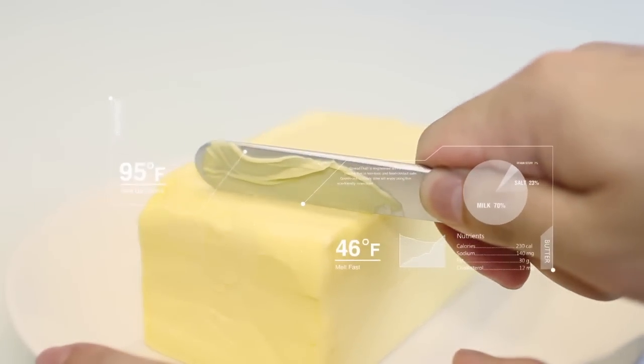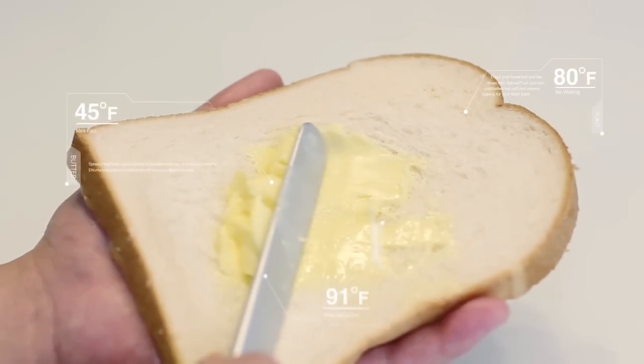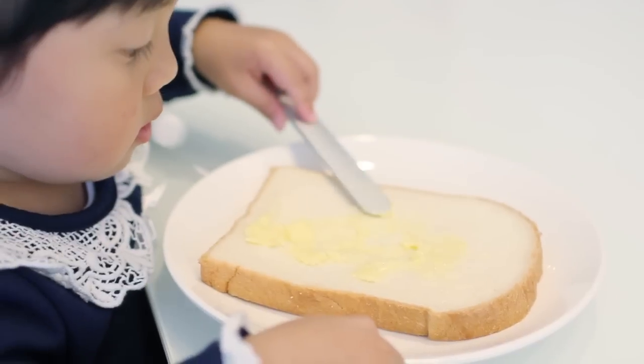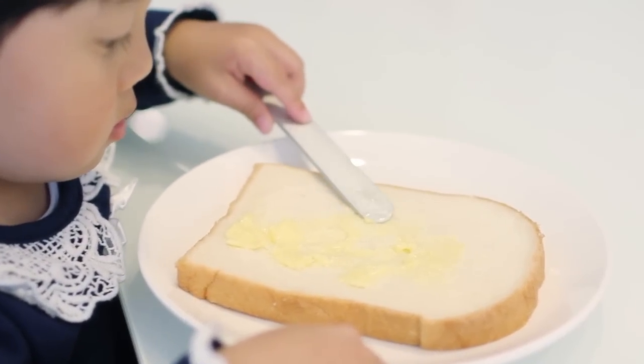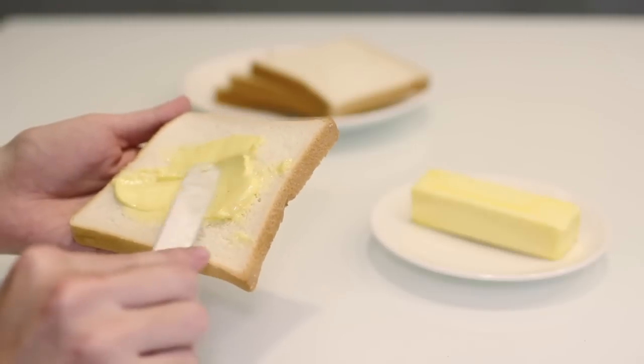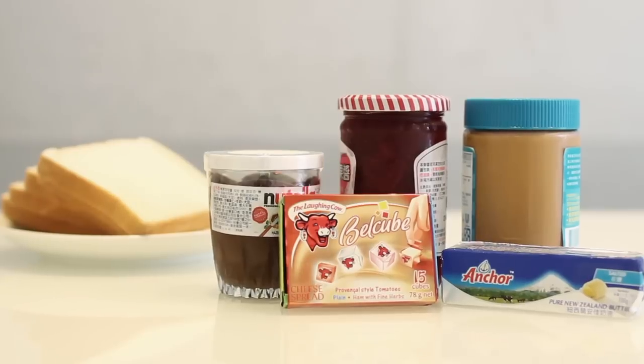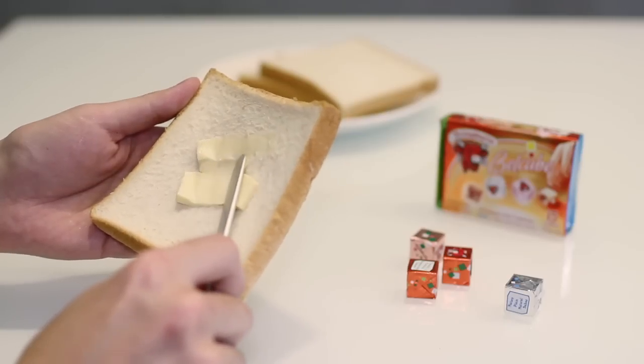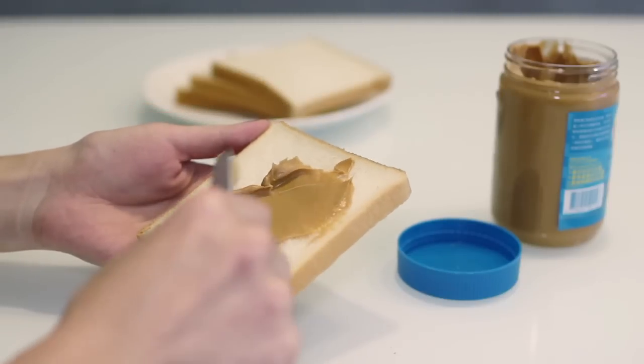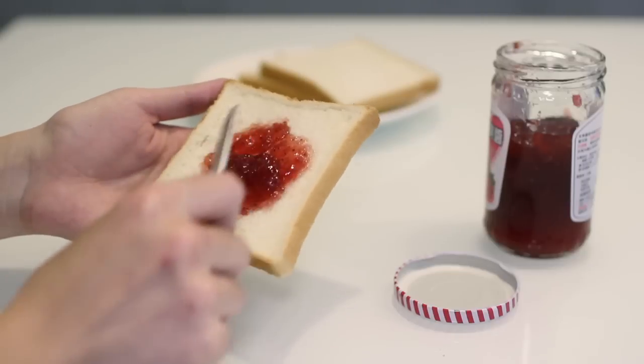By using no electricity, requiring no heating up, and having no sharp edges, Spread That is safe to use by anyone. Spread That is not only used for butter, but many other ingredients that you have around the house, including cheese, peanut butter, chocolate, jam, and many more.